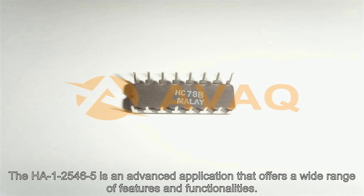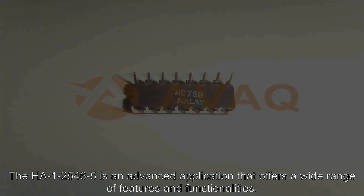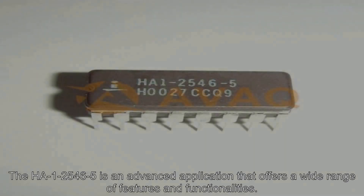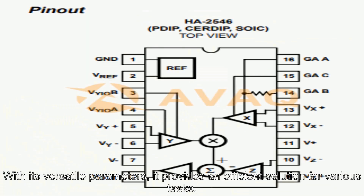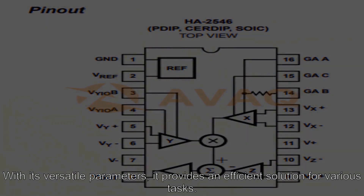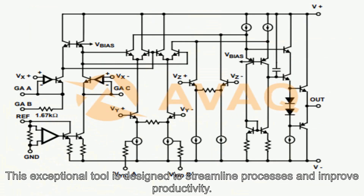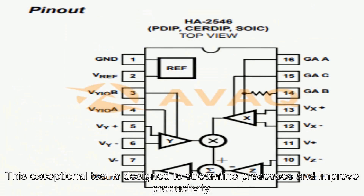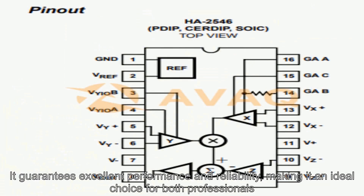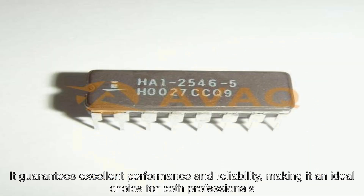The HA-1-2546-5 is an advanced application that offers a wide range of features and functionalities. With its versatile parameters, it provides an efficient solution for various tasks. This exceptional tool is designed to streamline processes and improve productivity. It guarantees excellent performance and reliability,